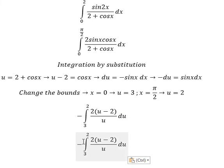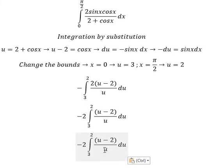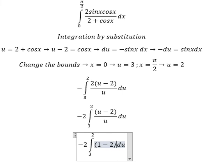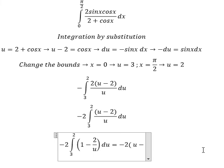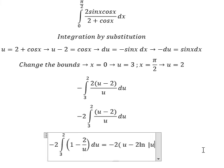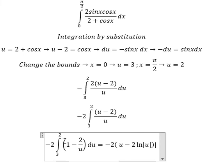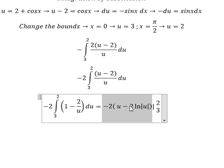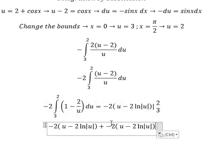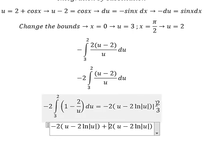We put the factor of two outside the integral. Now we change the bounds to two and three. The integral of 1 over u gives ln of the absolute value of u, and the integral of 2 over u gives 2 ln of the absolute value of u. We evaluate from three to two to get the final answer.